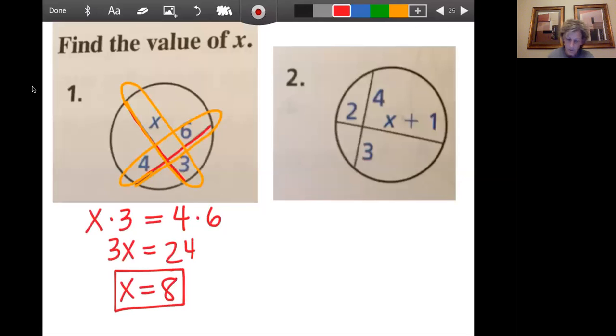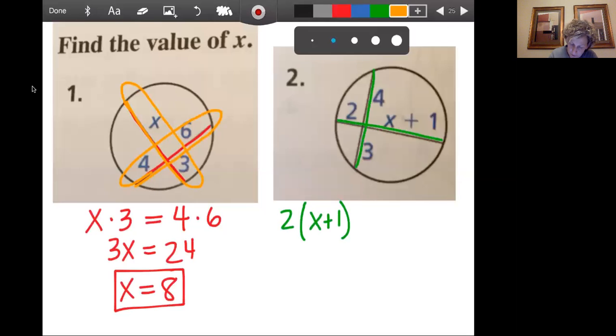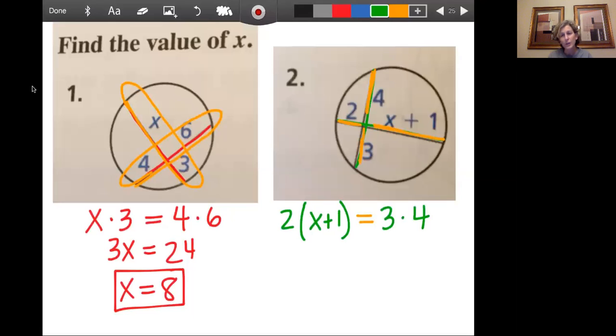So once again, on this second one, we see that we have two chords intersecting inside the circle. And therefore, we have two times X plus one. Each part, let me do it in a different color. Two times X plus one is going to equal three times four. We'll do that back in green. Three times four. Part times the part equals part times part, if you will.